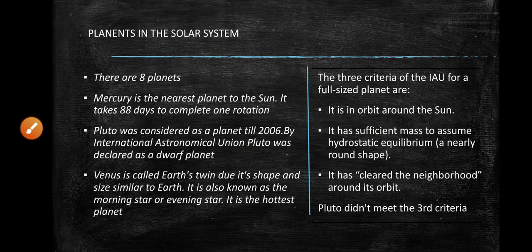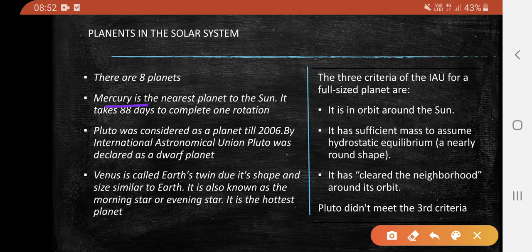Planets in the solar system: There are 8 planets. Mercury is the nearest planet to the sun and it takes only 88 days to complete one rotation.